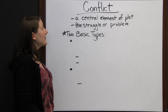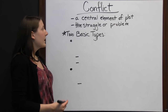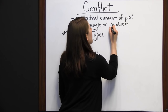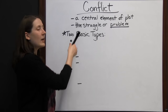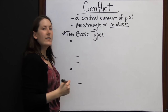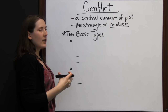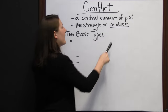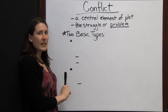Conflict is a central element of plot in any piece of literature. It is the struggle or problem around which the plot centers. Whenever you're thinking about conflict, think about problem — what is the problem in the story? What is it that they're trying to figure out a solution to? What is it that everyone's worried about? That's going to be your main conflict.